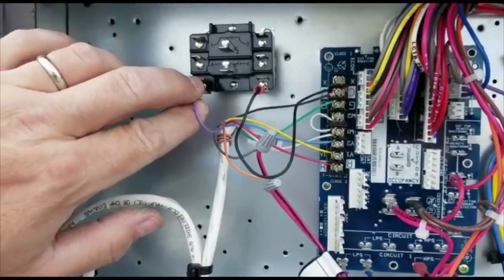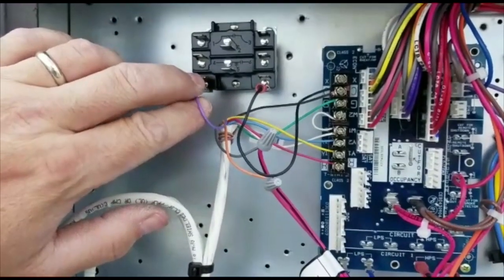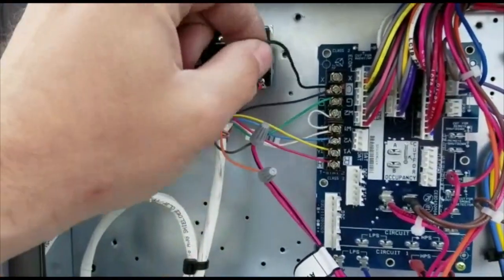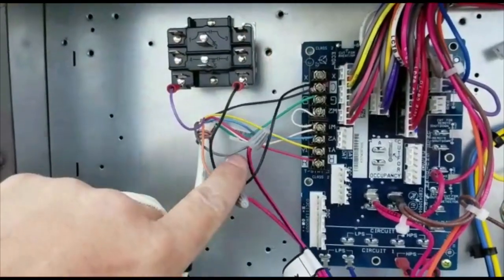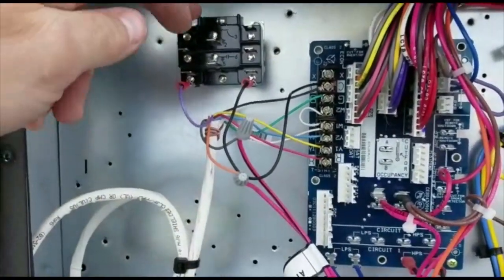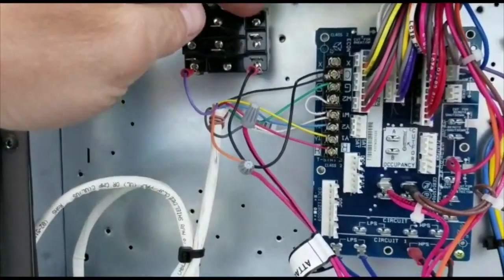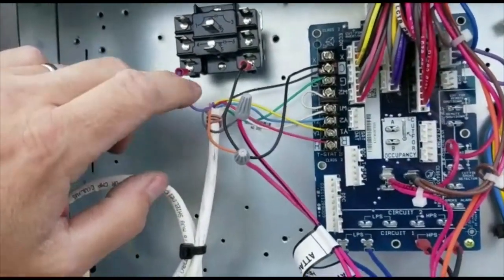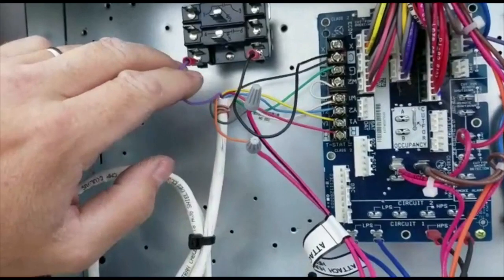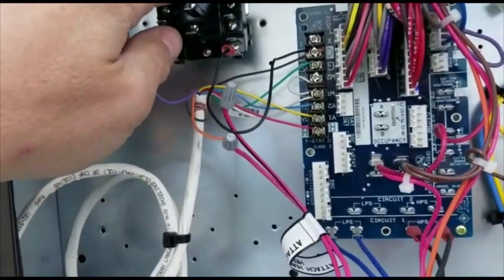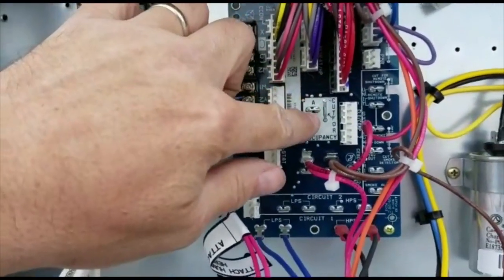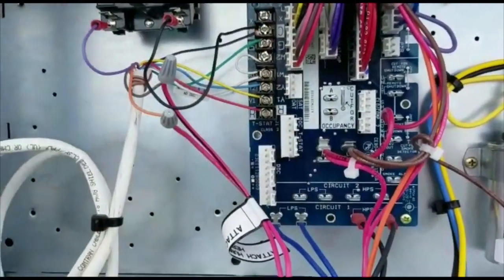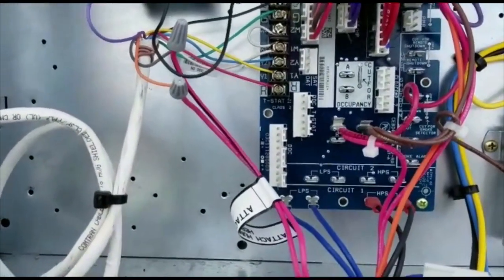...on our Wi-Fi thermostat. We have a common going to common on the board, and then we're coming out of the normally open set of contacts. So when the thermostat's programmed, the 24 volts will be sent to the relay, closing the contacts and allowing the board to run the economizer and ventilation better.